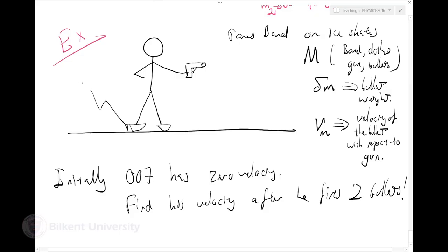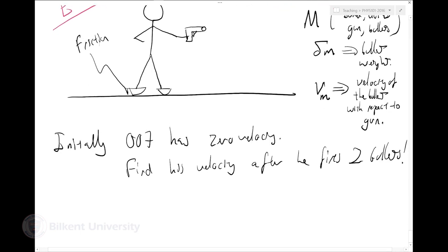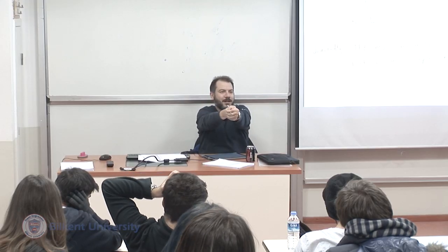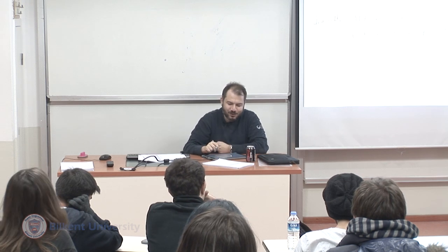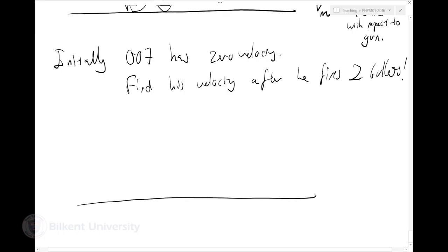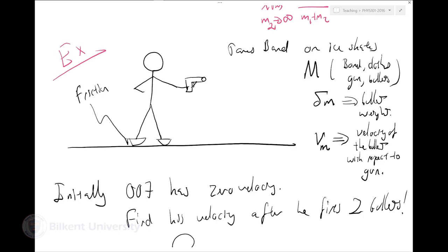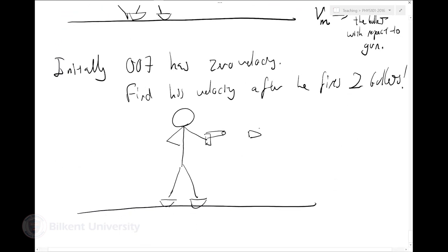If the ice skates create no friction, what will happen when James Bond fires a bullet? The bullet will go with some velocity, but there will be a reaction. Because total momentum is conserved, he will actually be moving in the other direction. After the first bullet is fired, let Vb1 be the bullet's velocity.